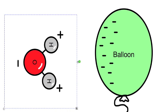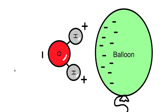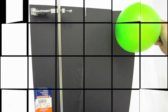This is what leads to each molecule pulling toward the balloon and making the stream look like it actually bends. It's just that electromagnetic attraction.